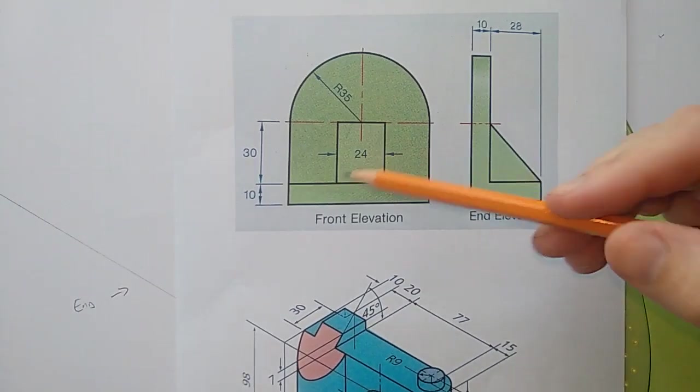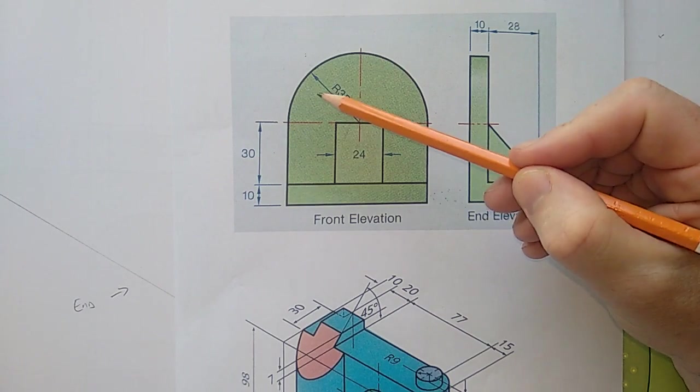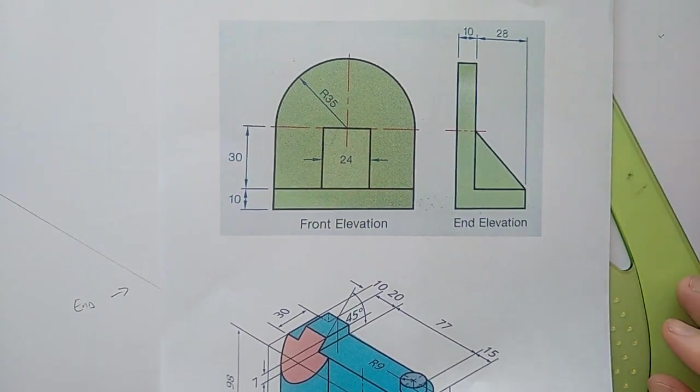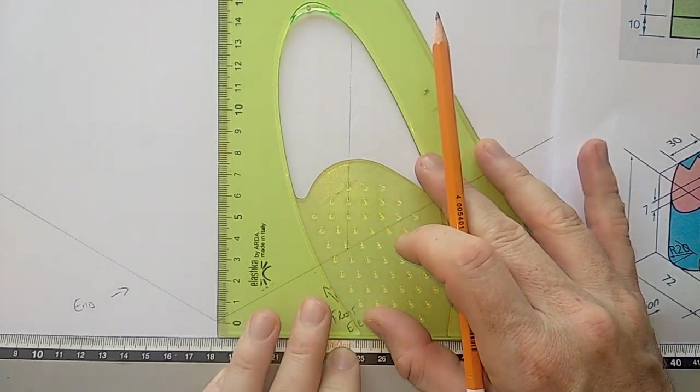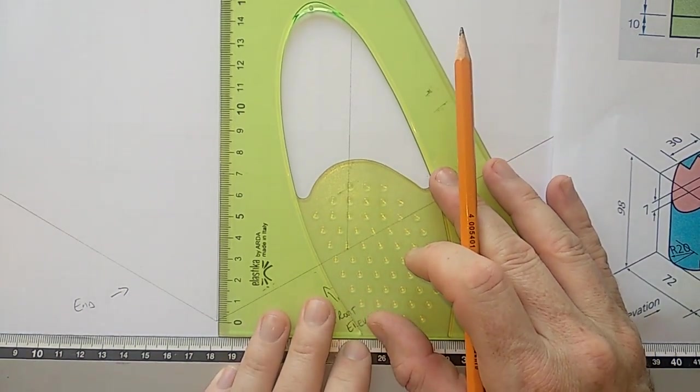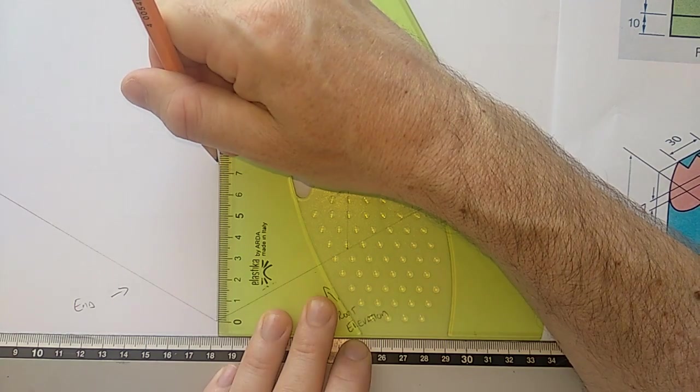The total height of this object is 10 plus 30 plus 35, which is going to be 75. 75. So there we are, 75.